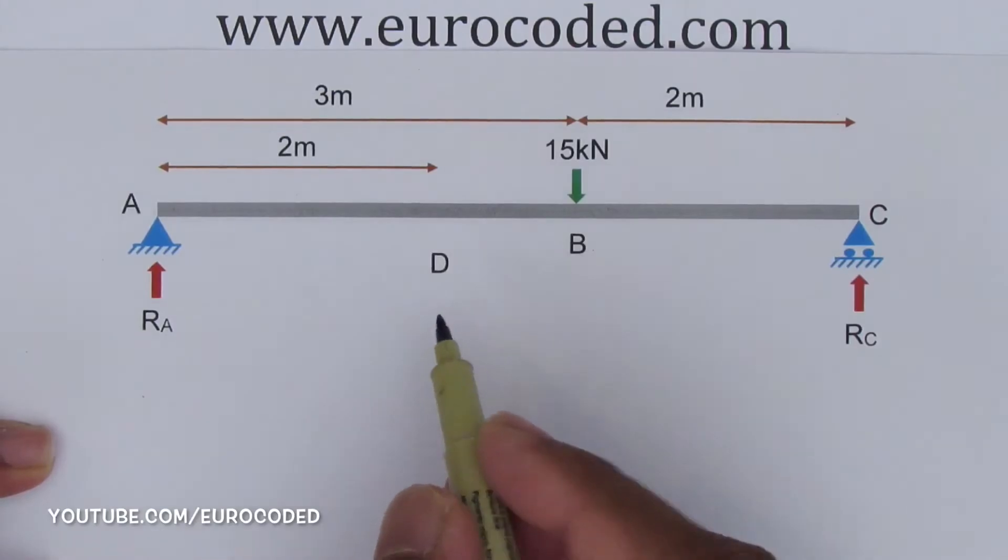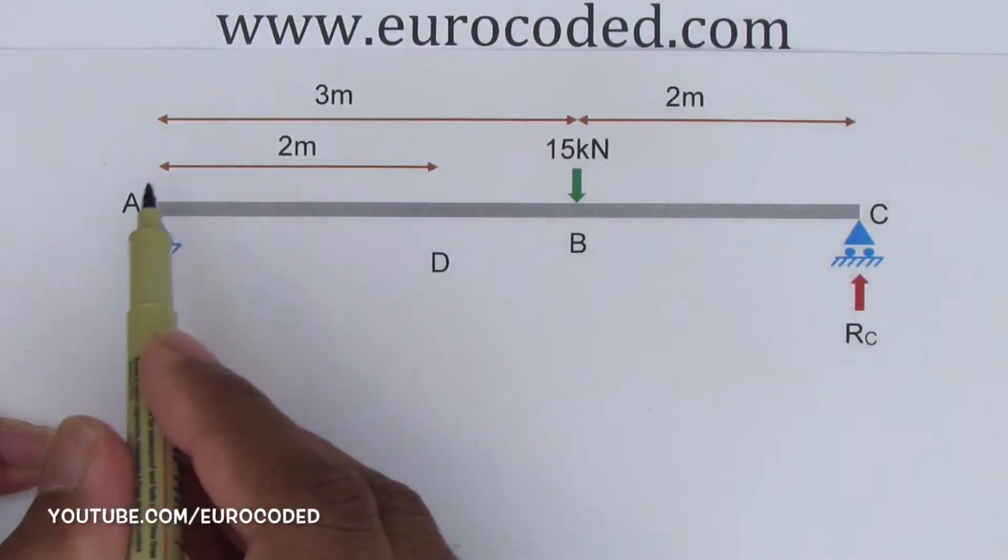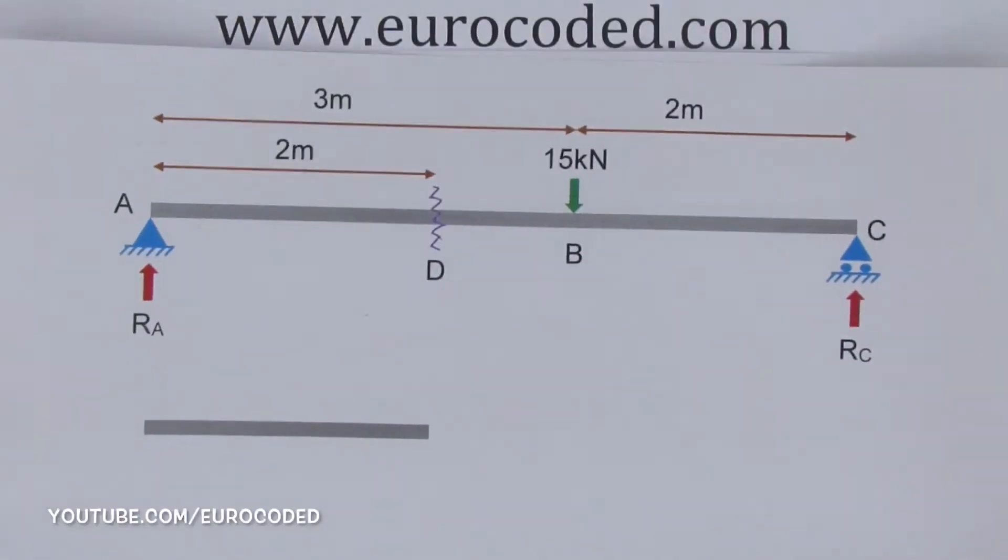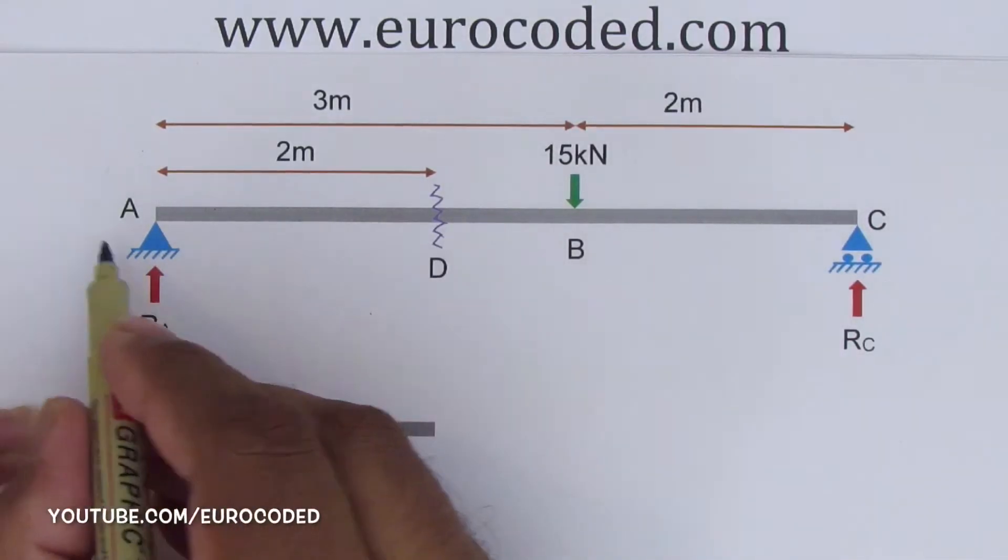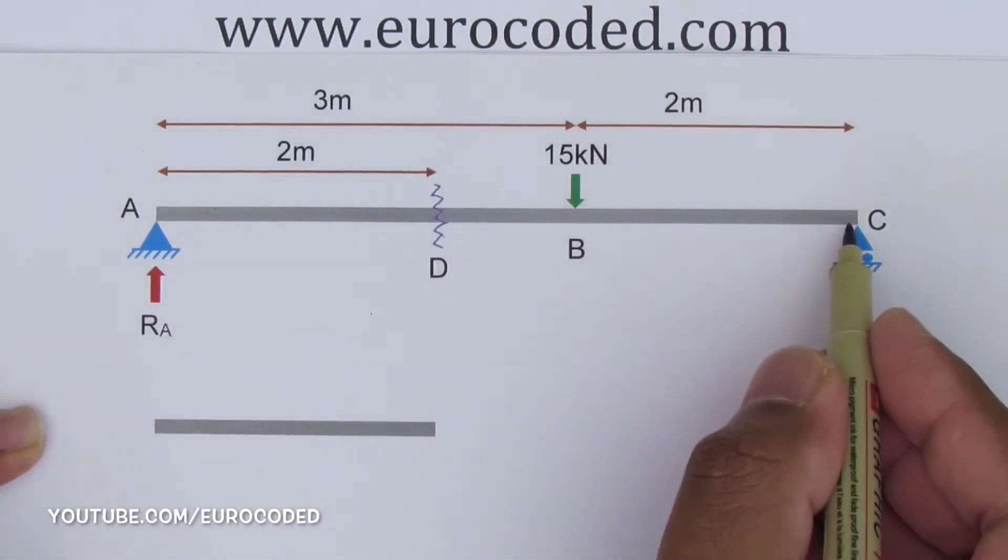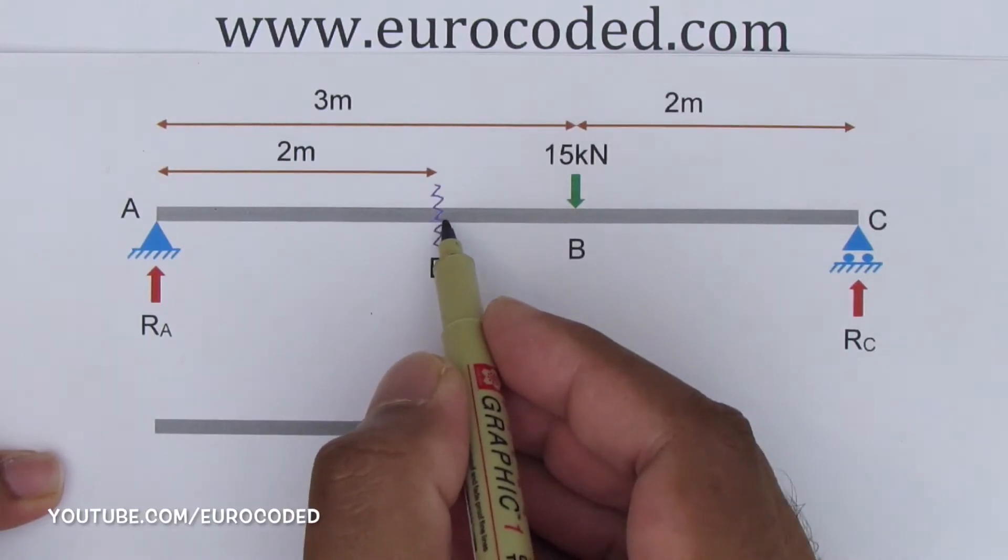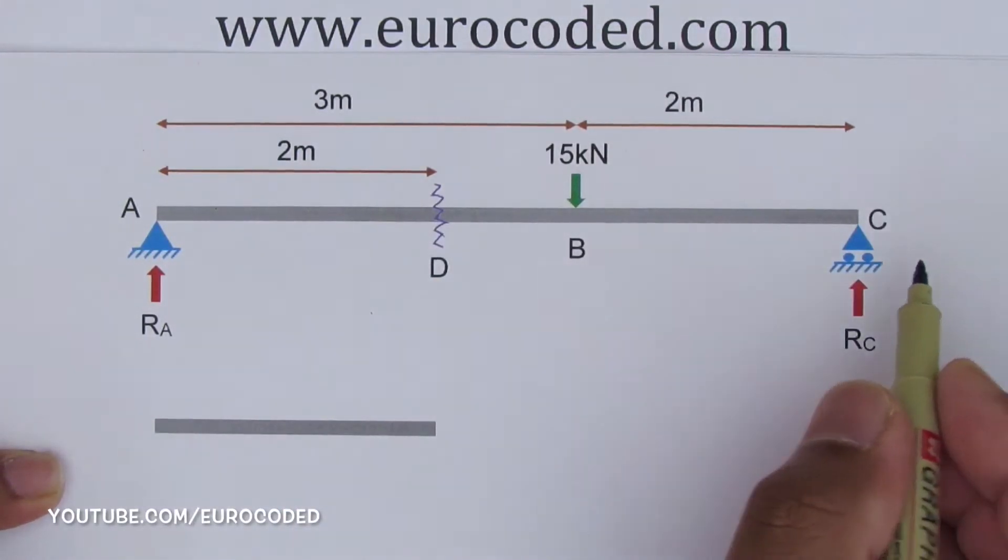The point I'm going to put an imaginary cut is point D, which is 2 meters from the support A. This is our imaginary cut and with this imaginary cut, what we have done is we have separated our beam into two sections, section AD on the left side of the cut and section DC on the right side of the cut.